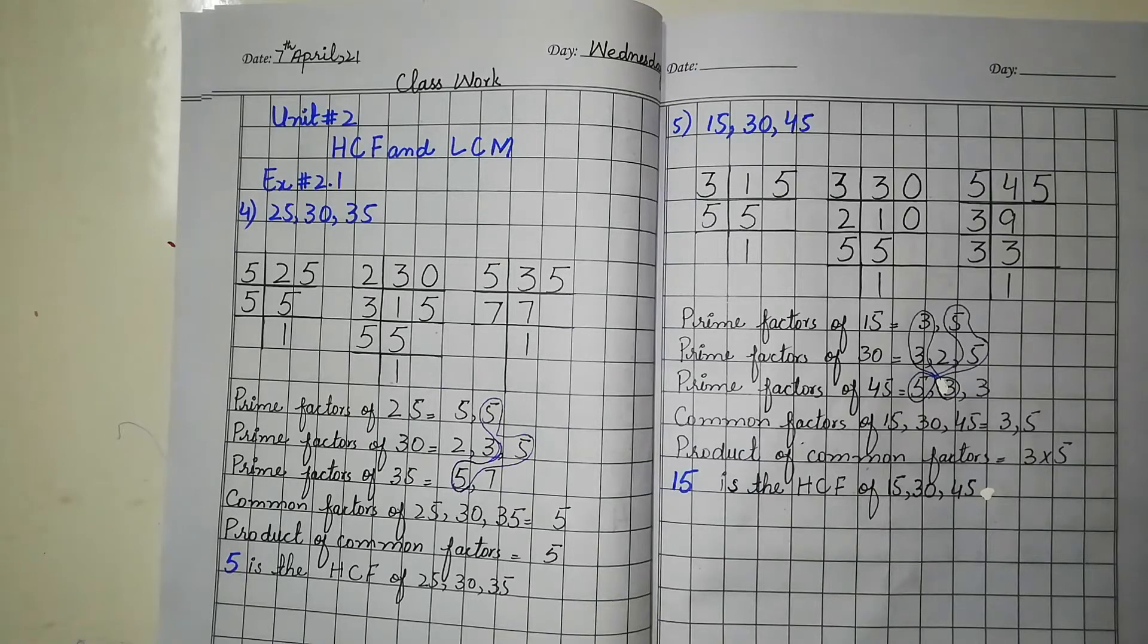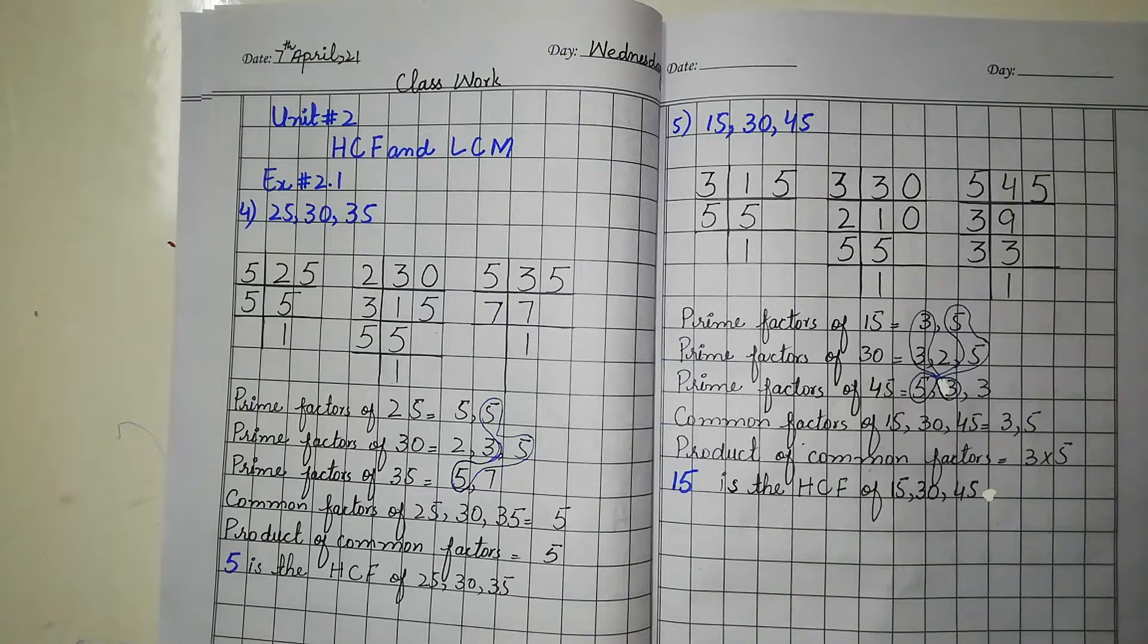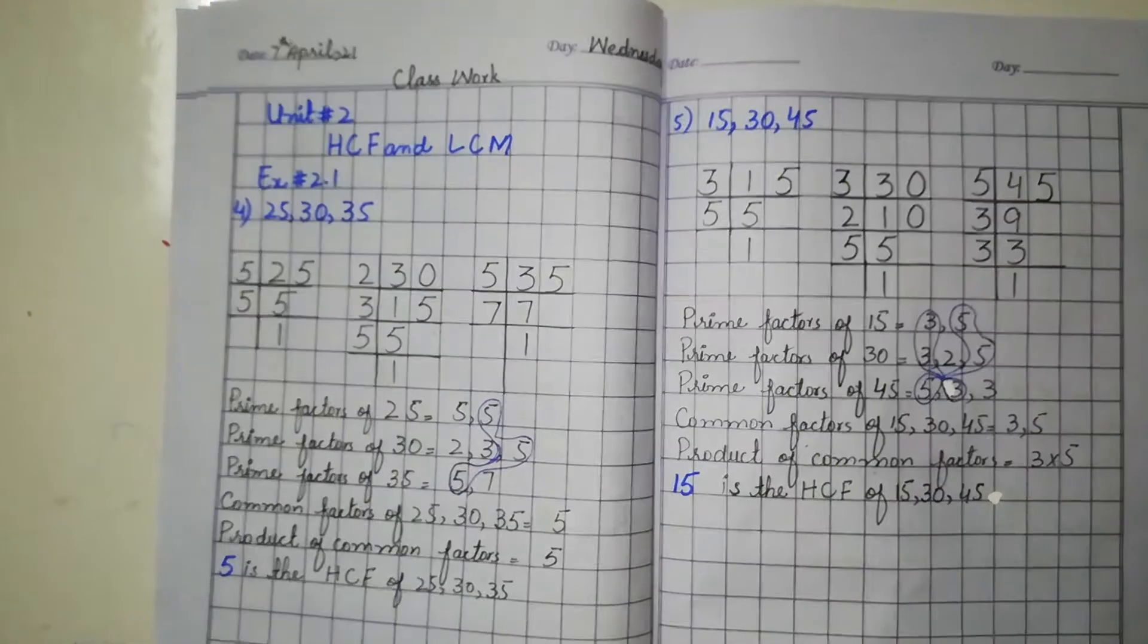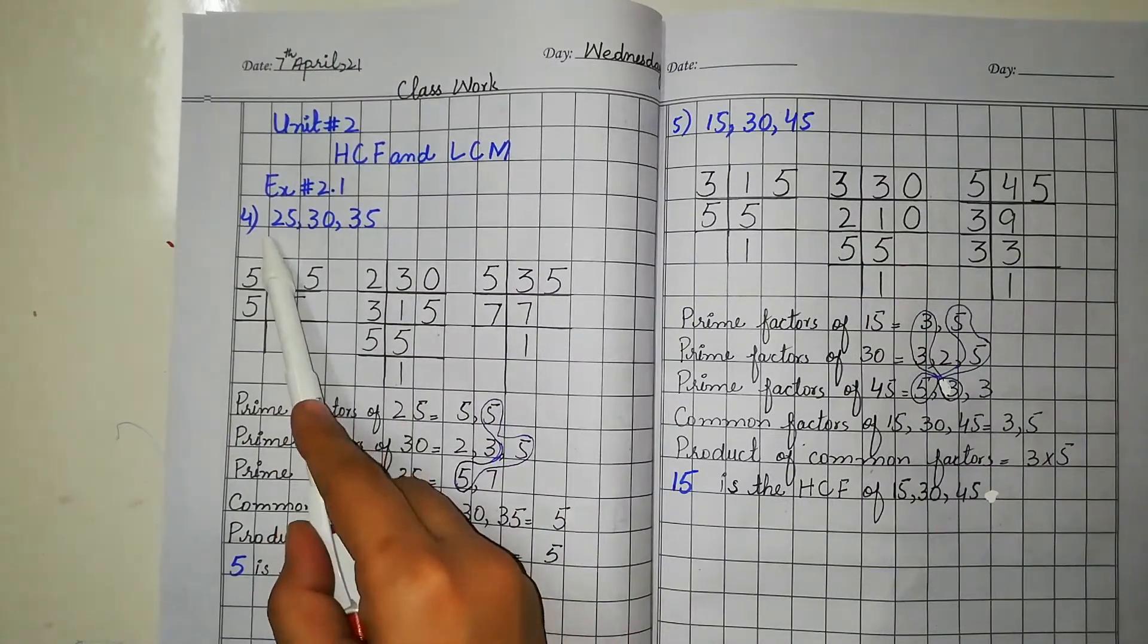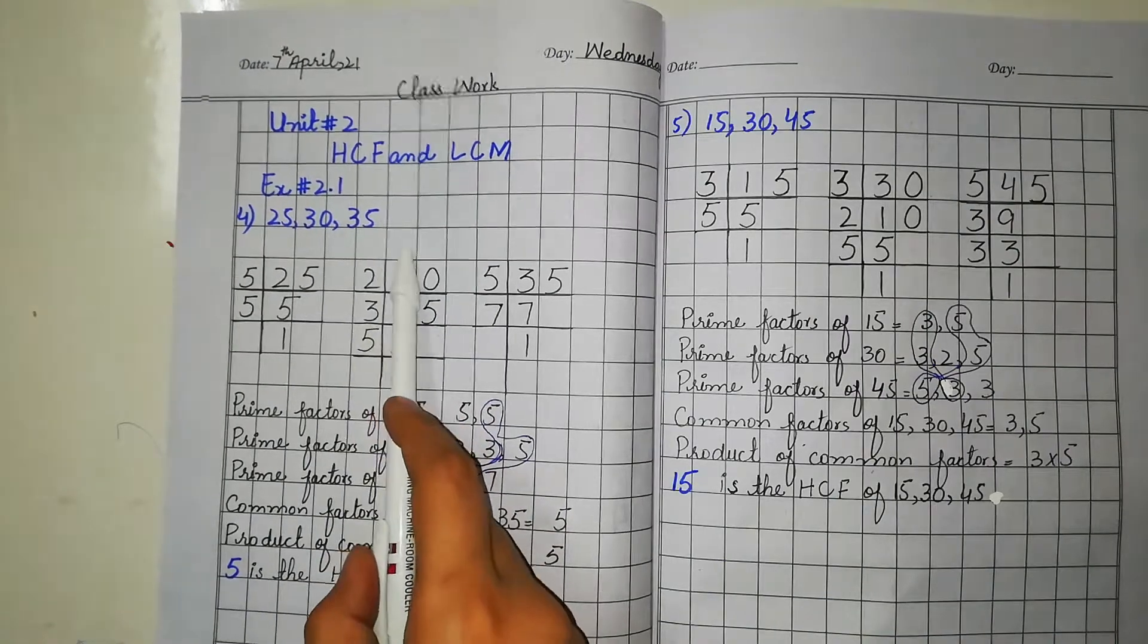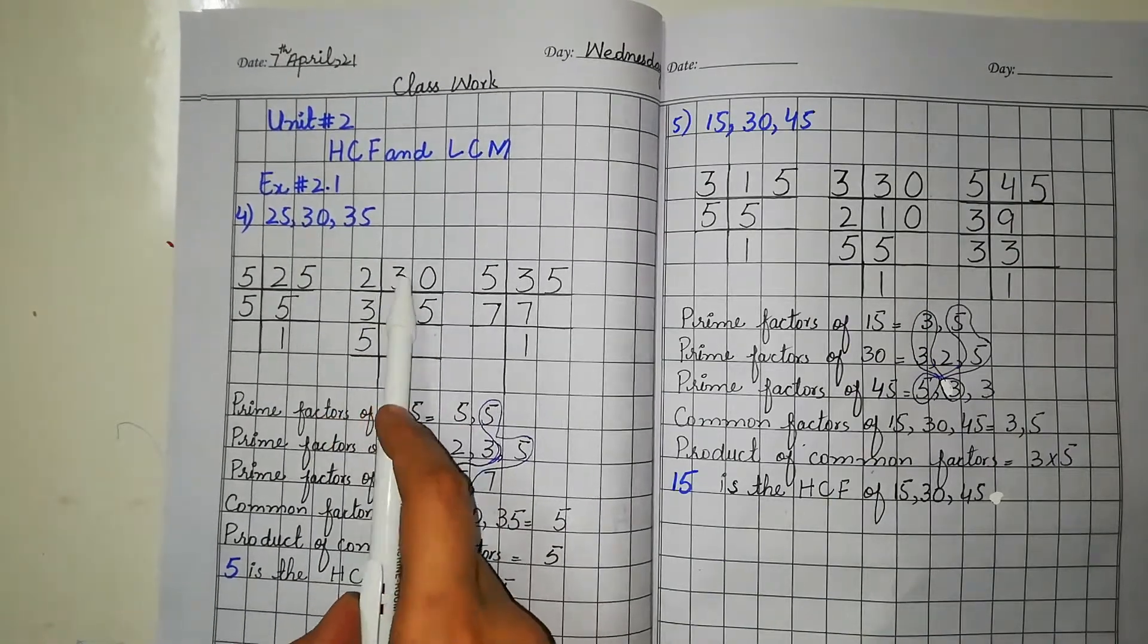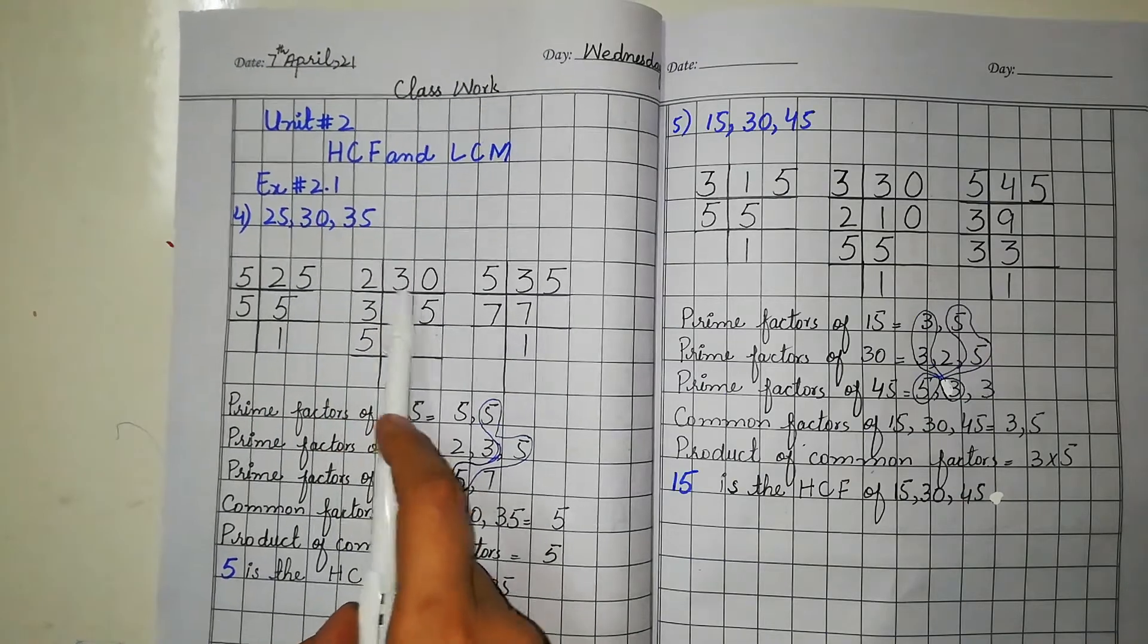Assalamu alaikum students, I'm your teacher from Lubel School System. I hope you all will be fine at your homes. Students, it's a math lecture, so open your math notebooks. Today we will do the next three questions of exercise 2.5: question number 4, find the HCF of 25, 30, and 35 by prime factorization method.